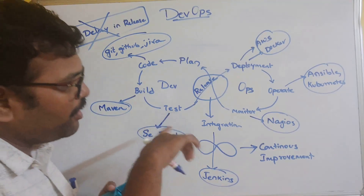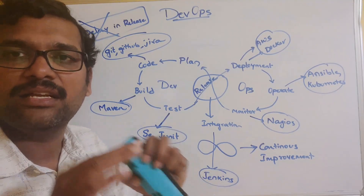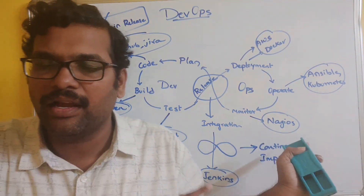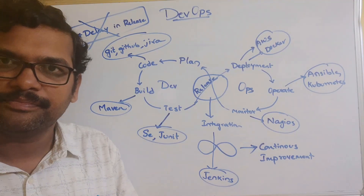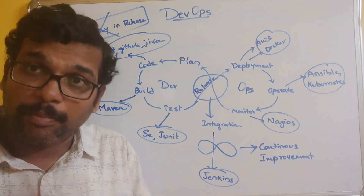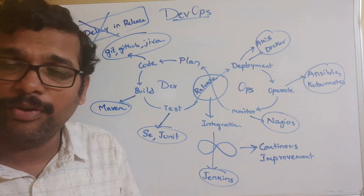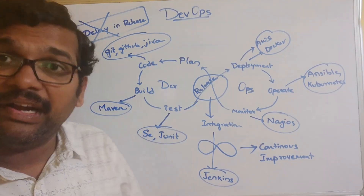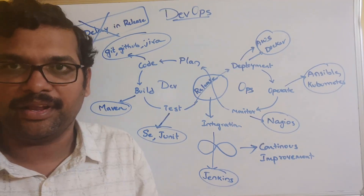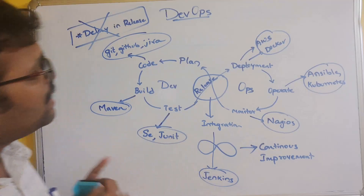Looking again at the DevOps representation — similar to the infinity symbol — it means continuous improvement. The benefits of DevOps include fast delivery through integration of development and operations, fast deployment, complete automation, higher efficiency, frequent releases, and accommodating customer requirements. Low-risk modifications are also possible because both teams work together.